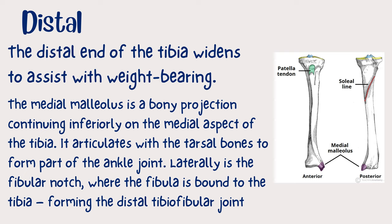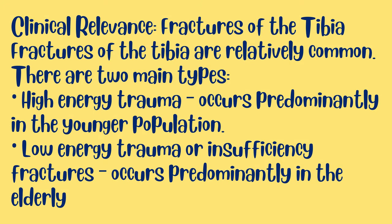The distal end of the tibia widens to assist weight bearing. The medial malleolus is a bony projection continuing inferiorly on the medial aspect of the tibia; it articulates with the tarsal bones to form part of the ankle joint. Laterally is the fibular notch, where the fibula is bound to the tibia, forming the distal tibiofibular joint.